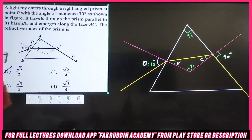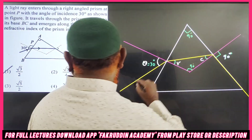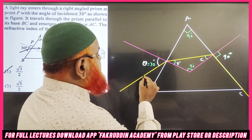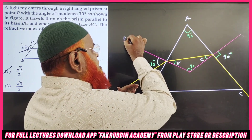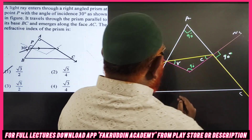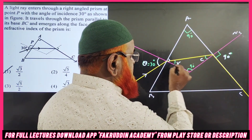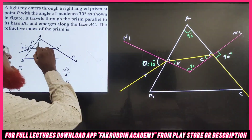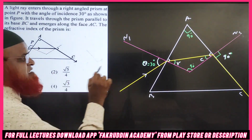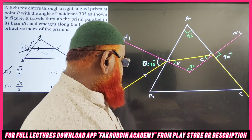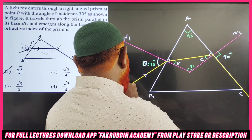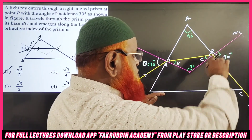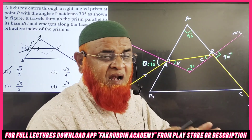Let us see the question. There is a prism ABC, and a light ray is entering into the prism. These are the normals drawn, n1 and n2, making 90 degrees with the sides. The corner angle is given as 90 degrees, and the line PQRS is such that QP and the base are parallel — this is given in the problem itself.